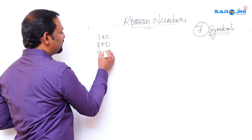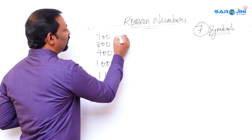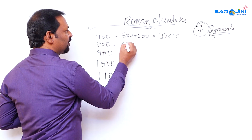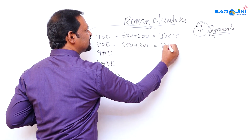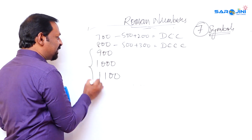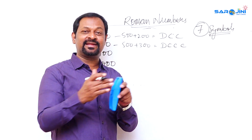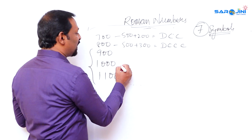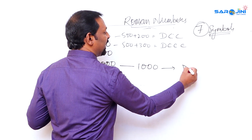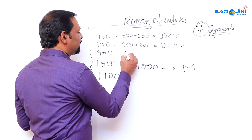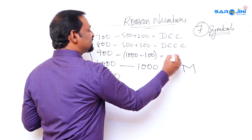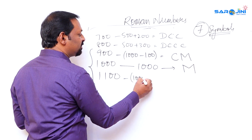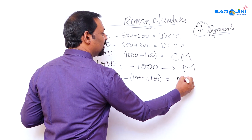Seven hundred is five hundred plus two hundred — DCC. Eight hundred is five hundred plus three hundred — DCCC. Nine hundred follows the nine-ten-eleven pattern: one thousand's symbol is M, so nine hundred is one thousand minus one hundred — CM. Eleven hundred is one thousand plus one hundred — MC.